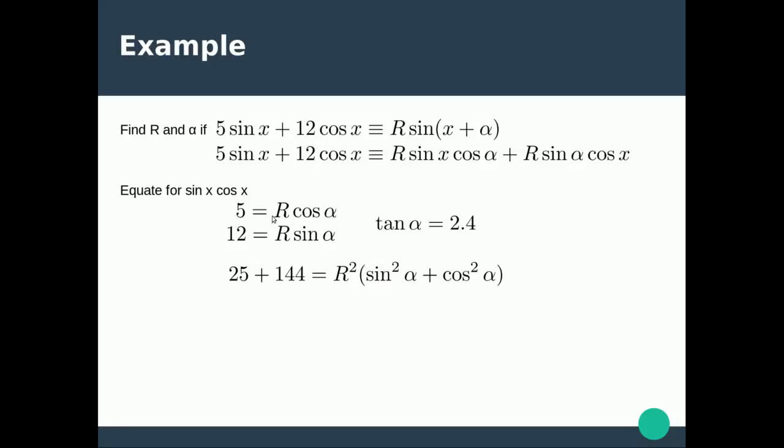The next thing we're going to do is square this function, square this function and add them both together. So 5 squared is 25, 12 squared is 144, this squared is going to be R squared cos squared alpha, this squared is R squared sin squared alpha.